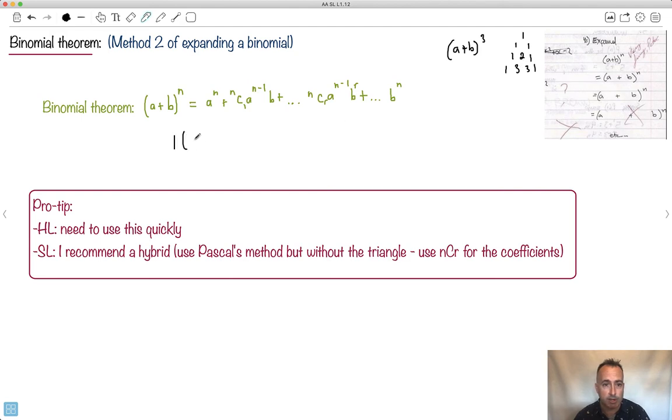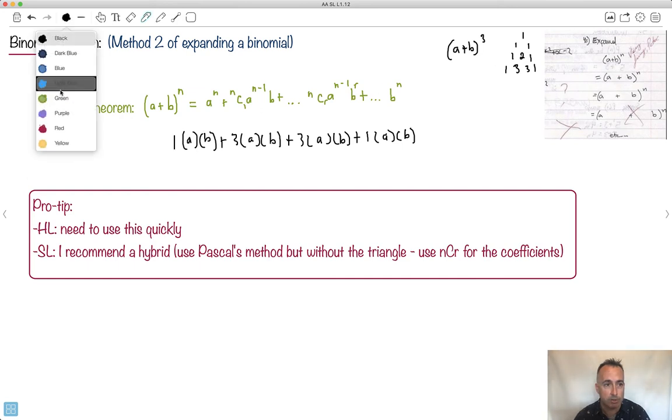Then I go 1, 1 plus 2 is 3, 2 plus 1 is 3. This is 1. I would then write these all out, wouldn't I? I would say this is 1, then I would write it like this. Plus 3. I just want to show you a contrast to this right here because this is going to be really important. This method I'm about to show you is going to be much faster.